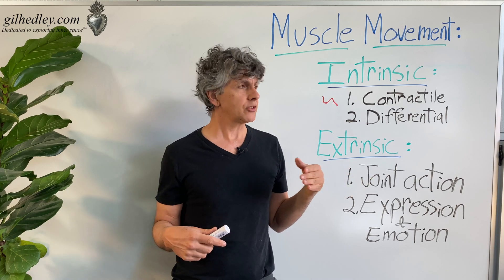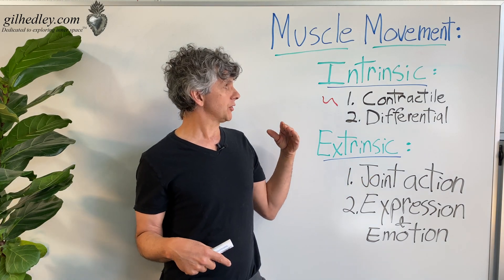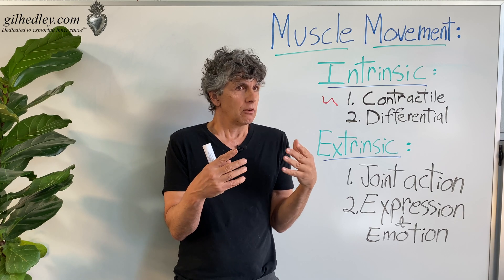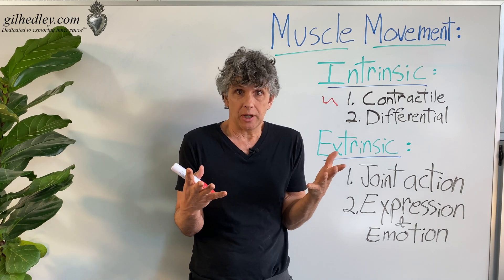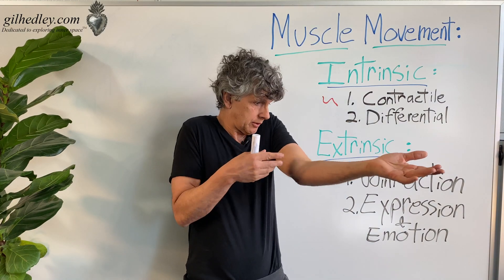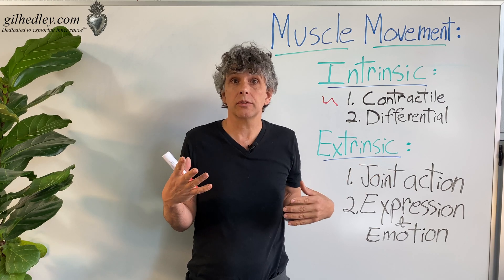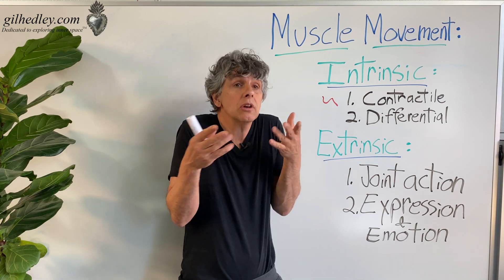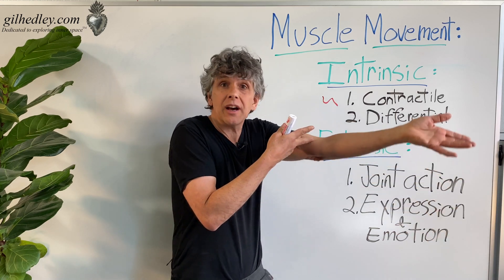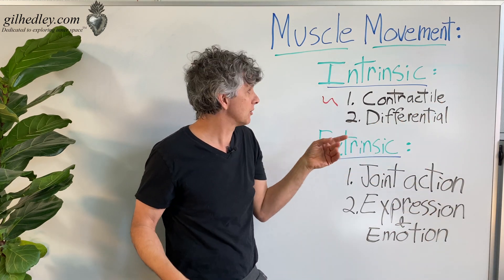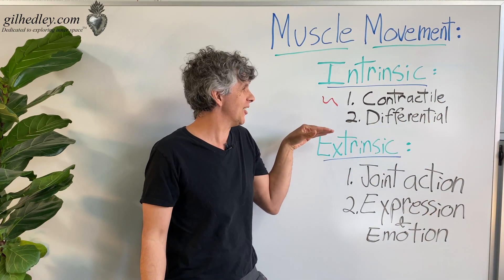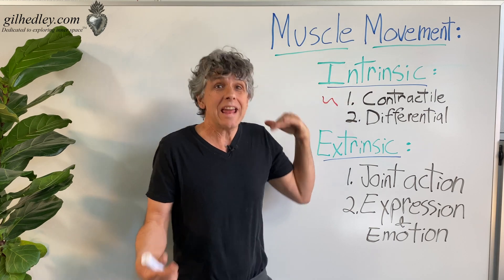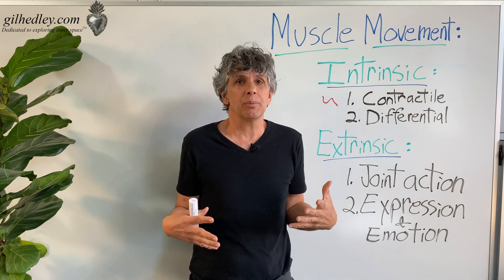This is a pretty amazing property — you don't see a tree doing it. Muscle tissue contracts within itself. That's a movement property of muscles. The word 'musculos' just means a little mouse, so it's like a little mouse skidding around inside.